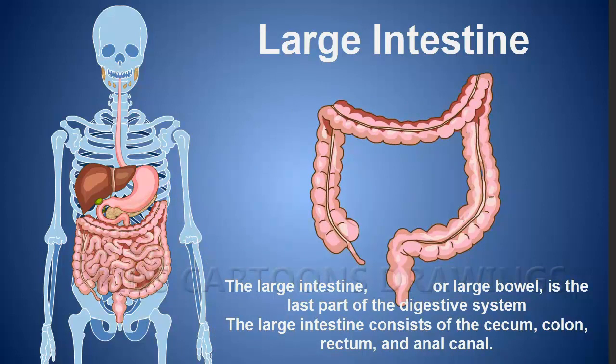Large Intestine: The large intestine or large bowel is the last part of the digestive system. The large intestine consists of the cecum, colon, rectum, and anal canal.